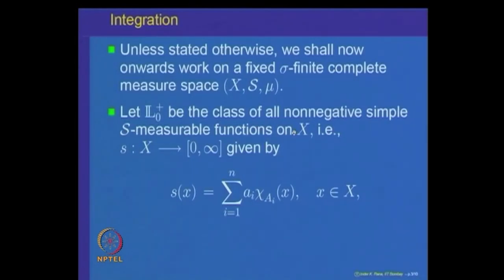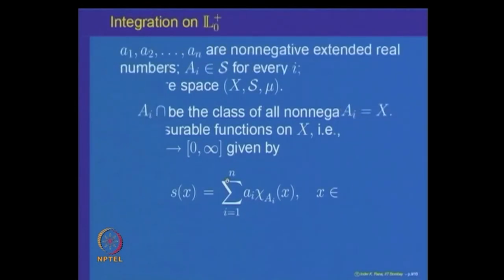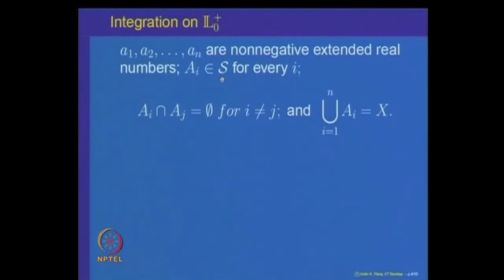Let us denote by L_0^+ the class of all non-negative simple S-measurable functions on x. Recall: a non-negative simple measurable function S is a function defined on x taking non-negative values with a representation S(x) = sigma_{i=1}^{n} a_i times the indicator function of the set A_i, where the a_i's are extended real numbers, the sets A_i are in the sigma-algebra S, they are pairwise disjoint (A_i ∩ A_j = empty for i ≠ j), and their union equals x.